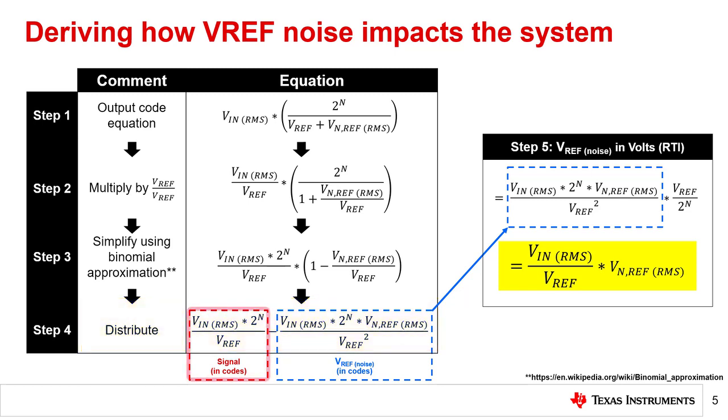Once this is completed, distributing the VN divided by VREF term results in the equation shown in step four. This equation has two parts: the code value for the input signal highlighted in red, and the code value for the reference noise highlighted in blue. Note that reference noise only shows up in the second term in this equation, which is the desired outcome. Finally, take this second term and convert it back to volts by using the equation in step five on the right. Multiplying by the reference voltage and dividing by the maximum code value yields the equation highlighted in yellow. The voltage reference's input referred noise is the total reference noise scaled by the ratio of the input signal to the reference voltage. Or in practical terms, the more of the ADC's full scale range that you use, the more reference noise you let into your system.